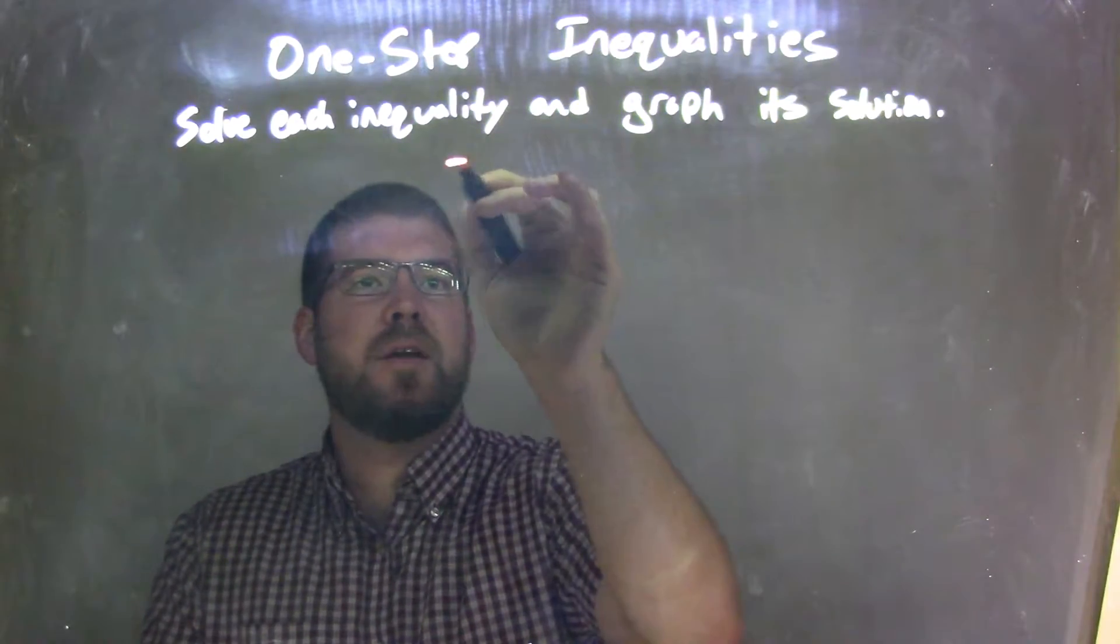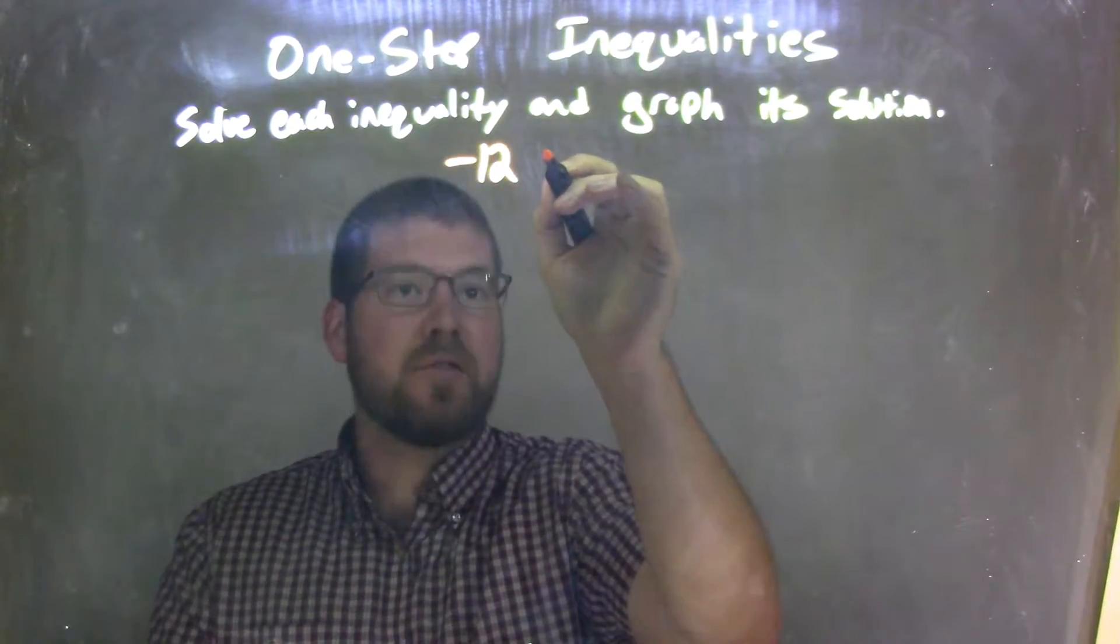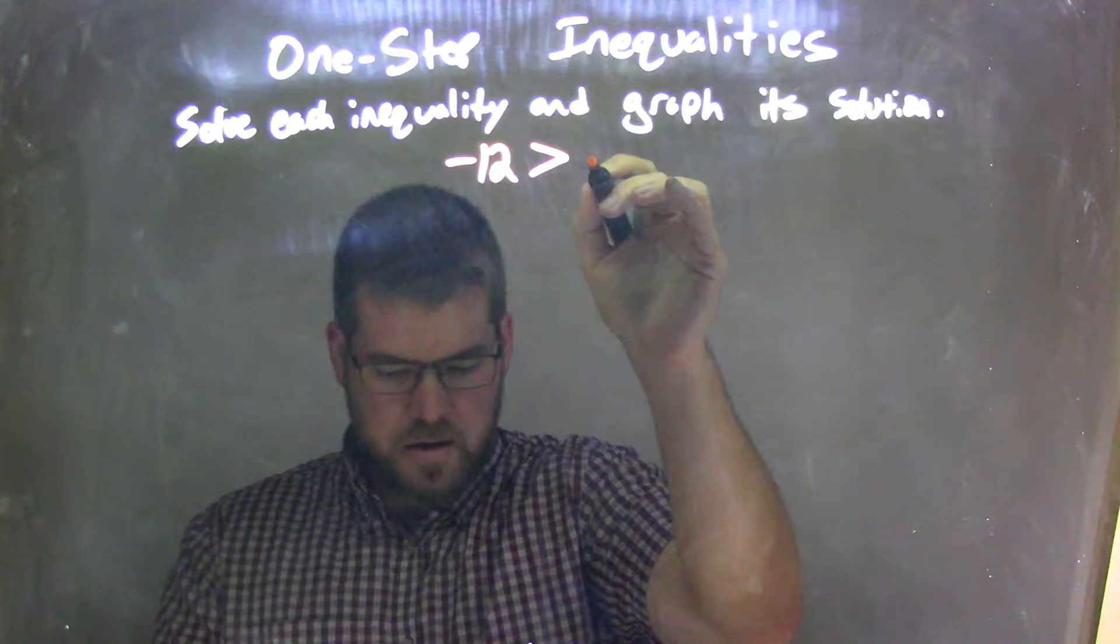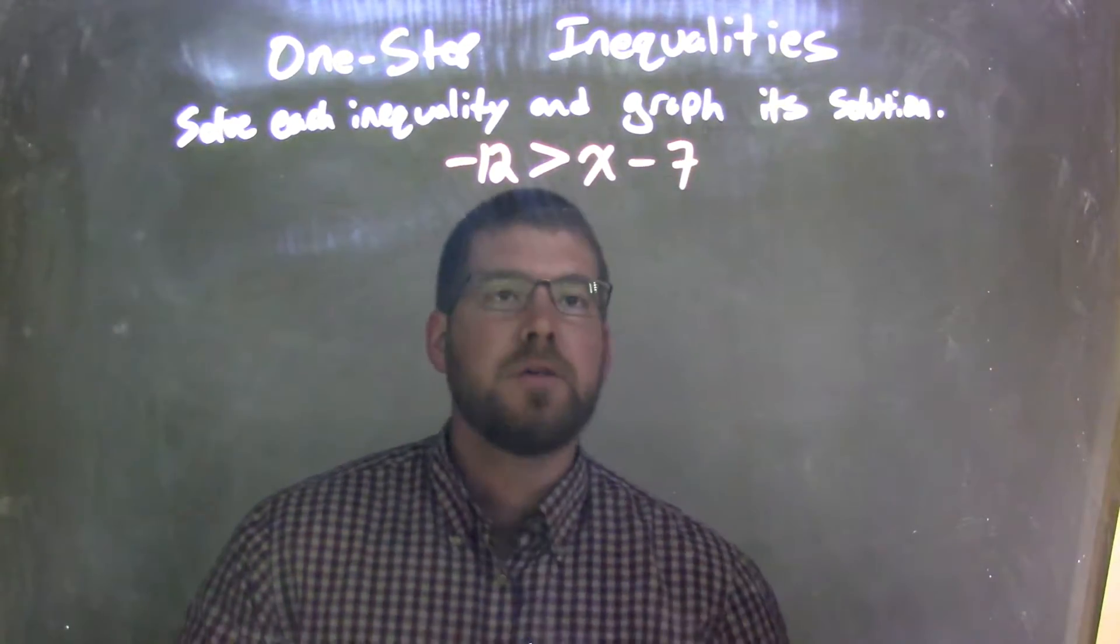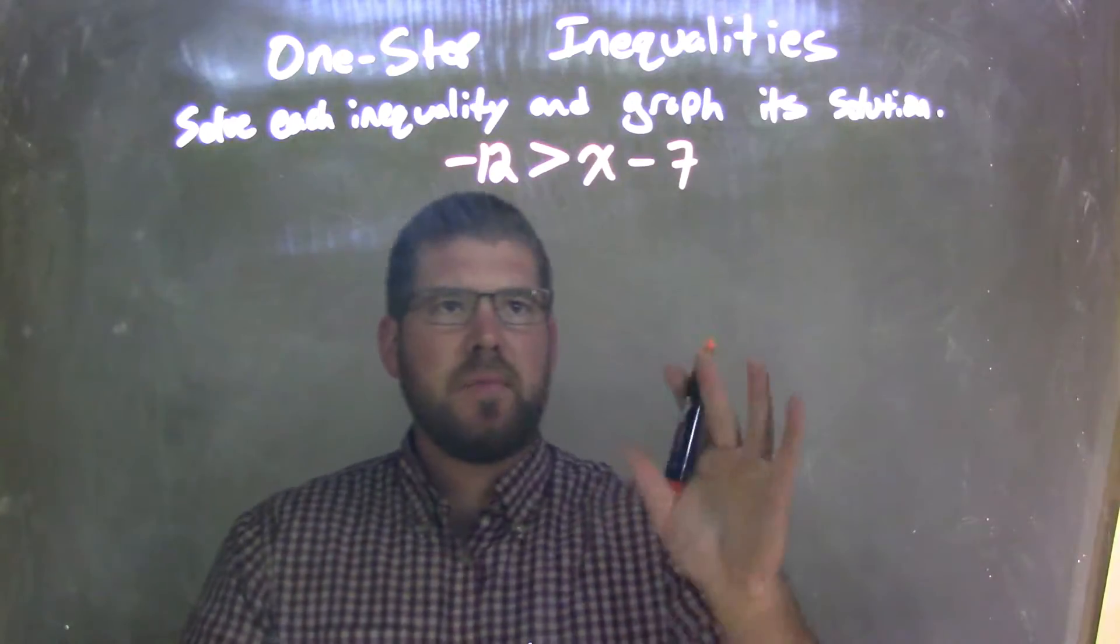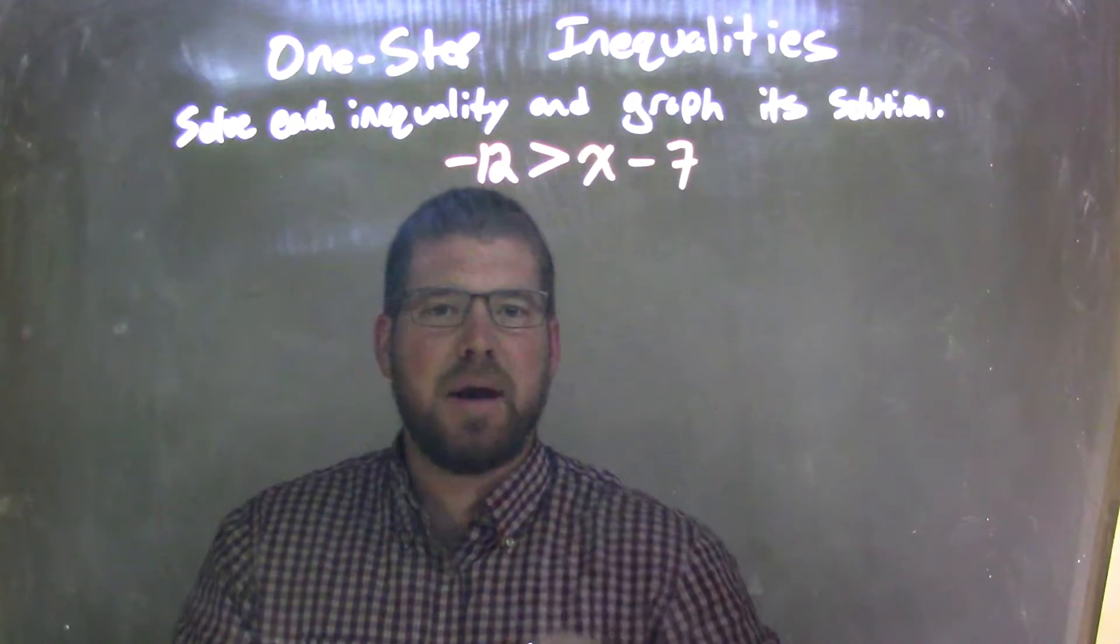So if I was given this inequality, negative 12 is greater than x minus 7, what I want to do here is first I'm going to simplify this to get x by itself, isolate it.